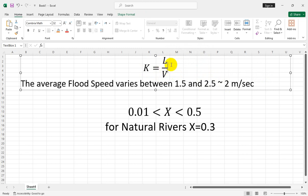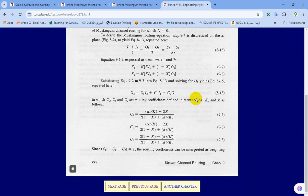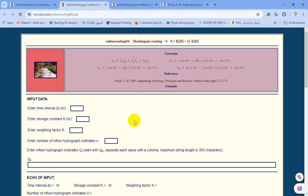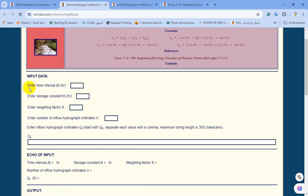By using this simple formula, you can obtain a reasonable value for the K parameter. Let's come back to the PONSE website. For routing flood using this website, first of all you should enter the time step of your input hydrograph. Let's assume that we have a flood hydrograph with a time step of one hour.